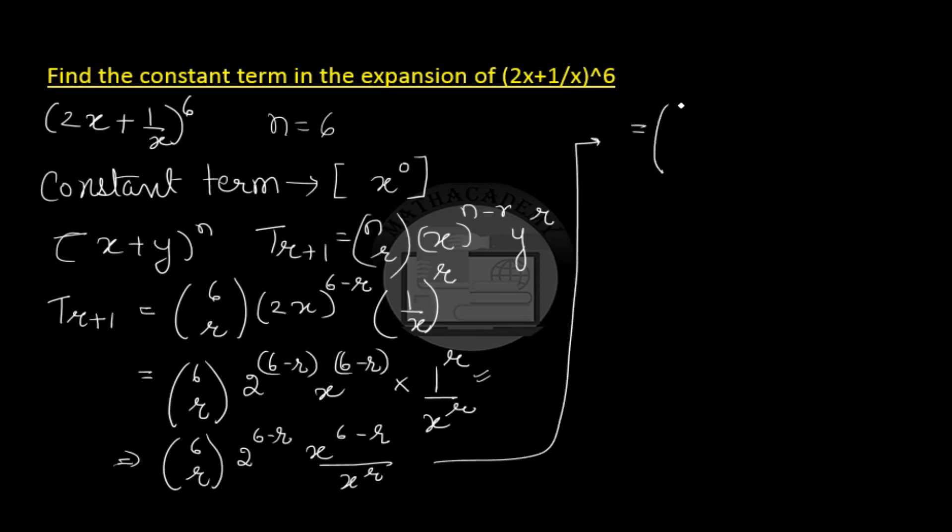Now further simplify it. So 6 choose r, 2 to the power of 6 minus r, and x to the power of 6 minus r and minus r. When the bases are same and in division the powers get subtracted, the laws of exponent. So 6 choose r, 2 to the power of 6 minus r, into x to the power of 6 minus 2r.